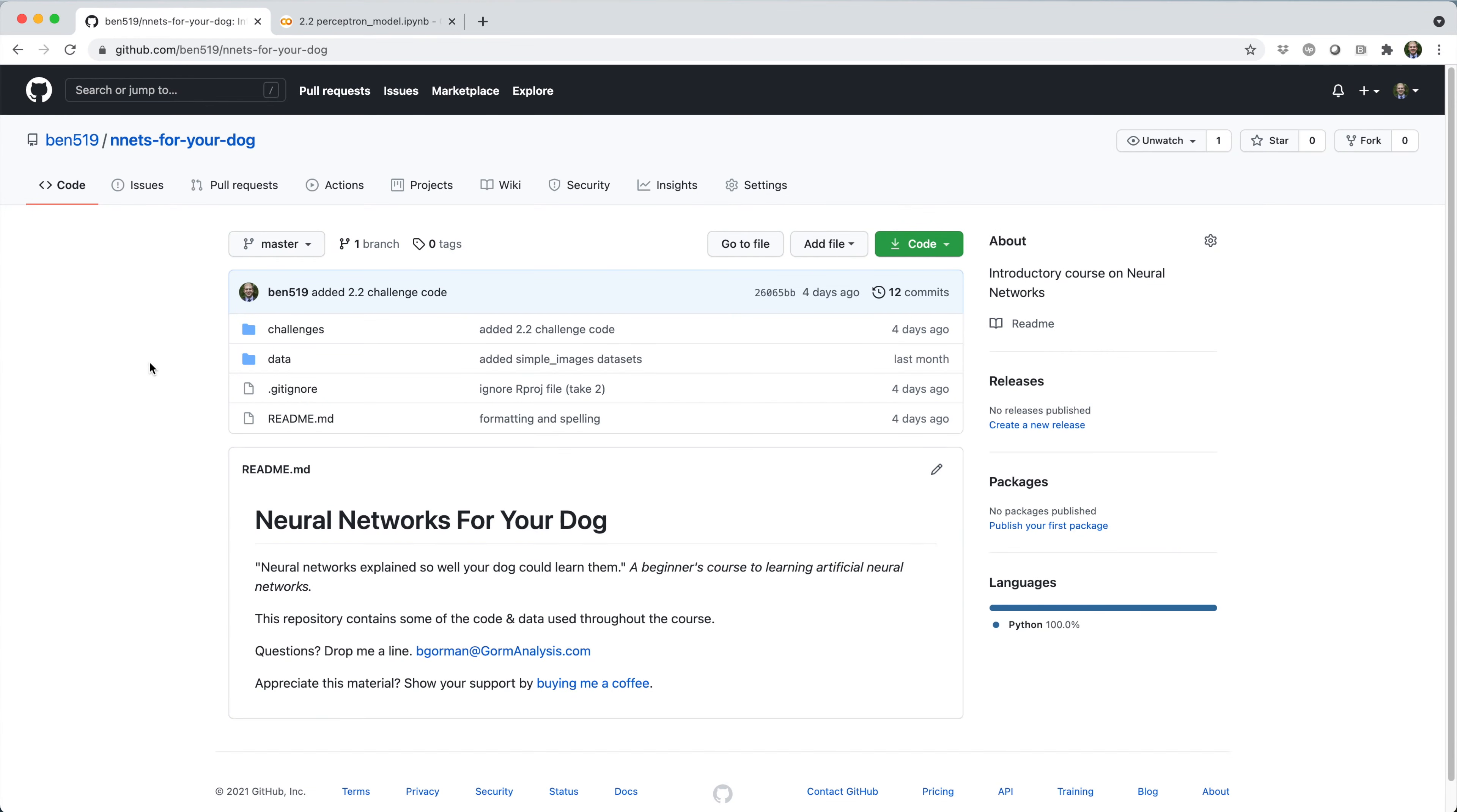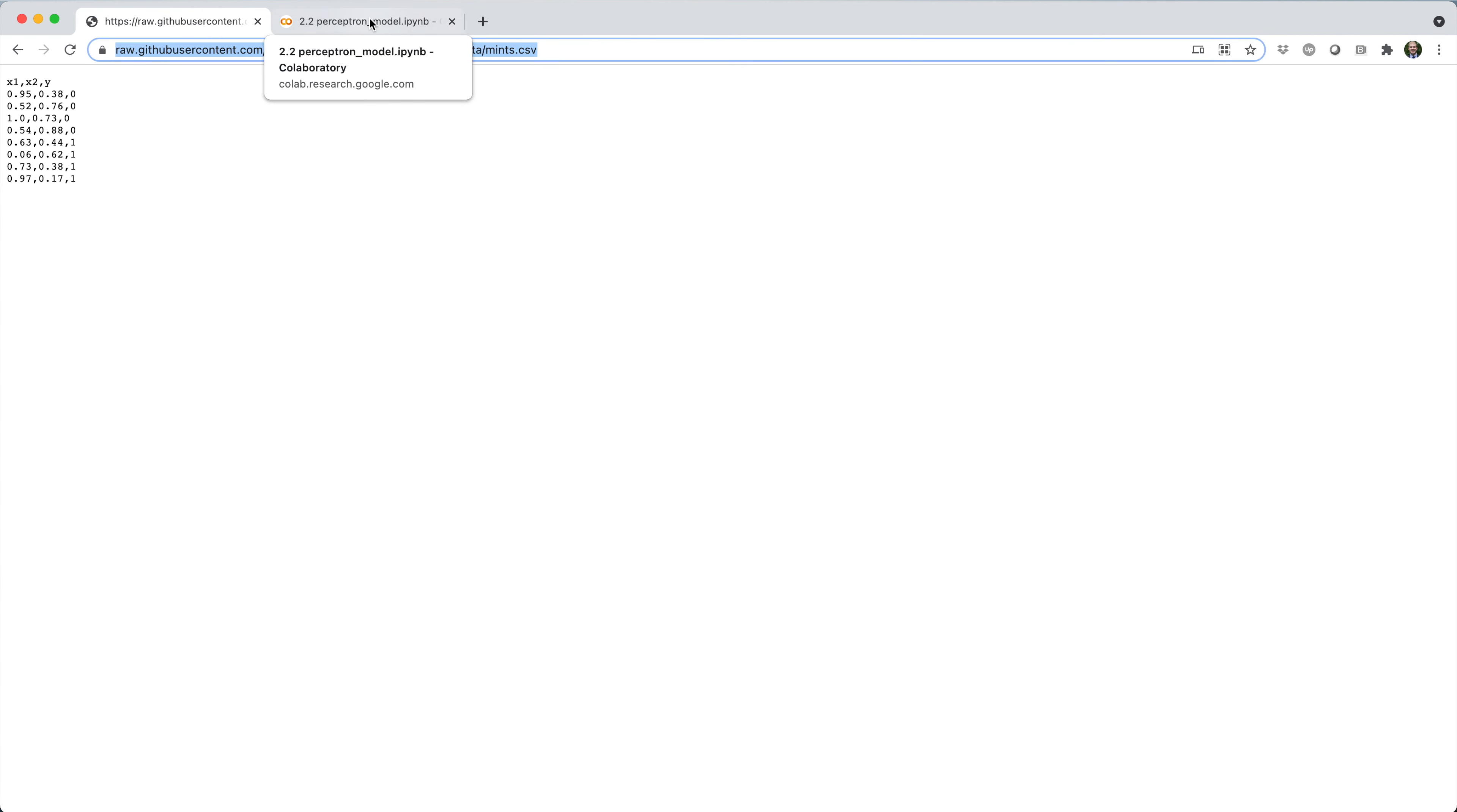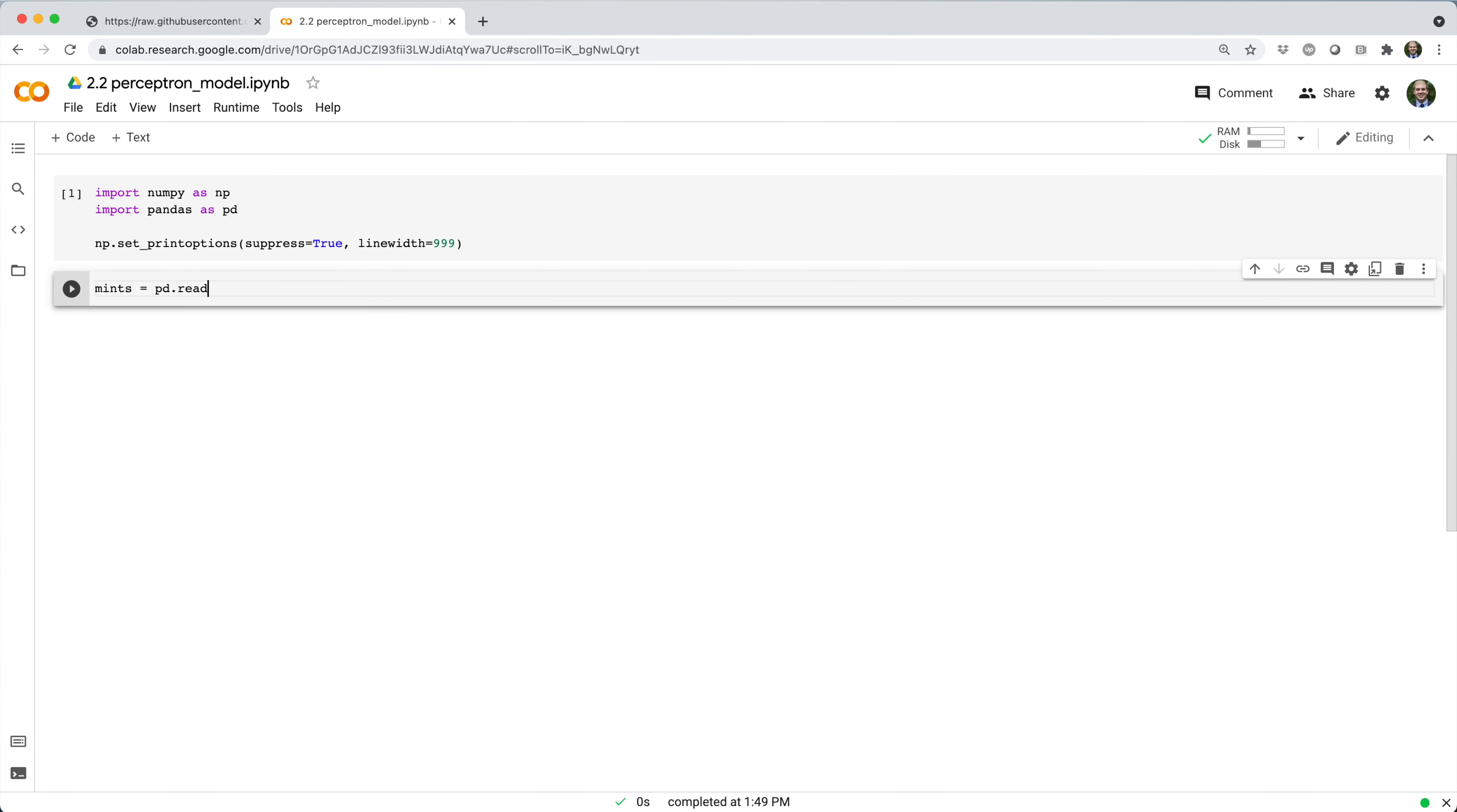To introduce it, we're going to work on a dataset even simpler than MNIST. We're going to work on a dataset I made up called MINTS. Like MNIST, I put the MINTS dataset on my public GitHub repo, so you can download it directly into a pandas dataframe, like this.